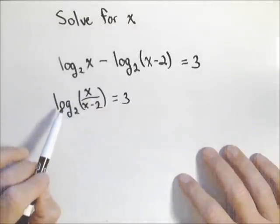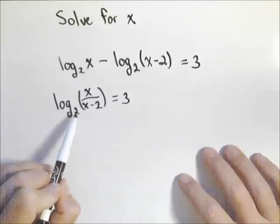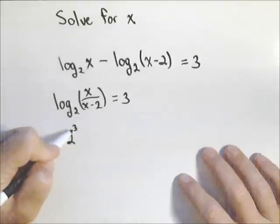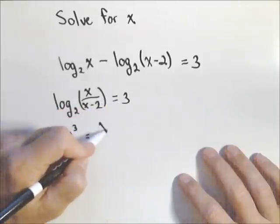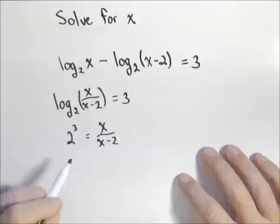Once we have it down to a single log, what we're going to do is rewrite it as an exponential. So two raised to the three, that's our exponent, is equal to x over x minus two, and now we no longer have the log.